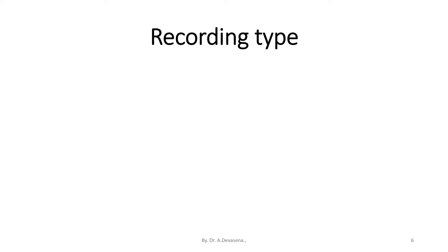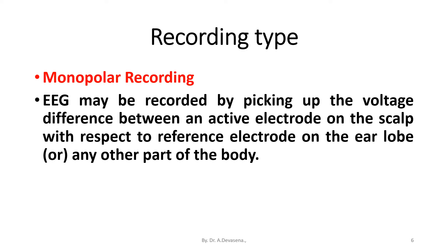EEG recording type may be monopolar recording. EEG may be recorded by picking up the voltage reference between an active electrode on the scalp with respect to a reference electrode on the earlobe or any other part of the body. Then we have bipolar recording. Bipolar recording is more popular. Here, the voltage difference between the two scalp electrodes is measured.